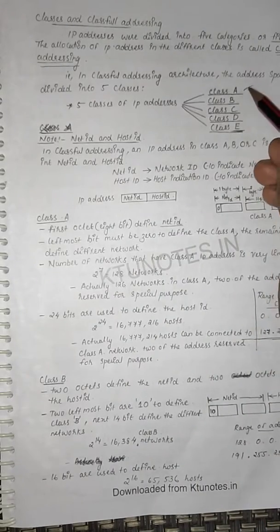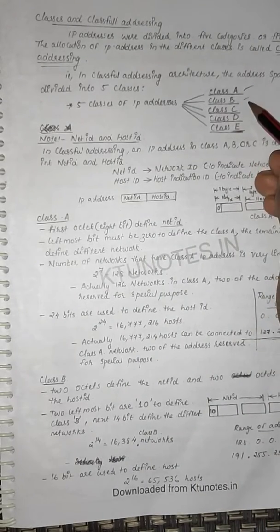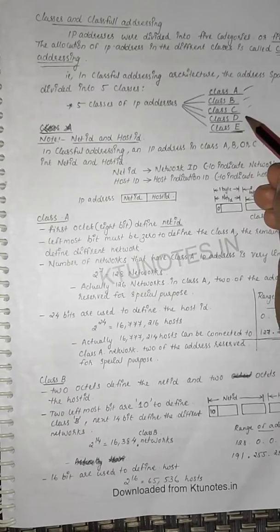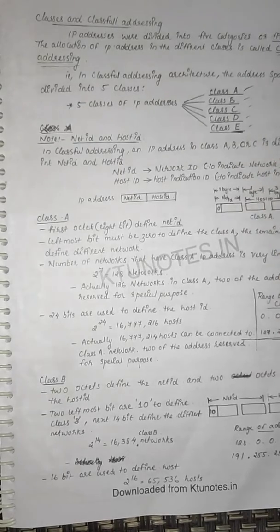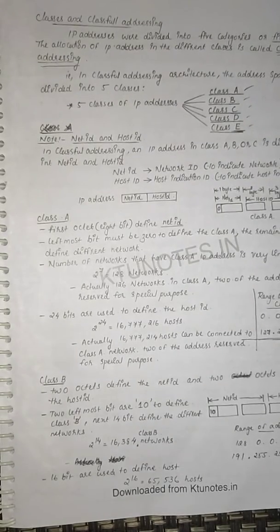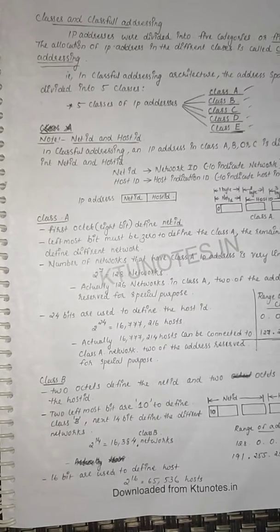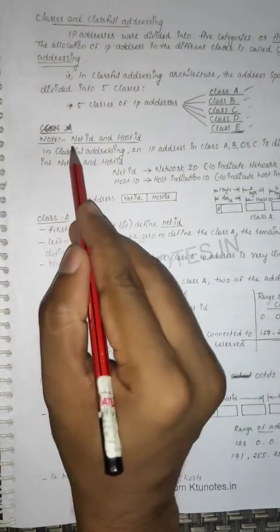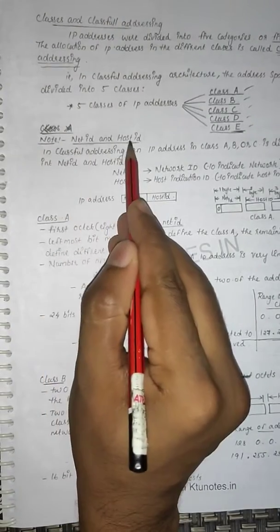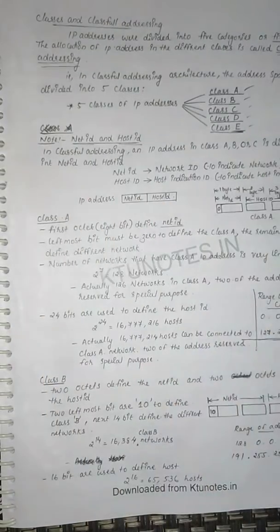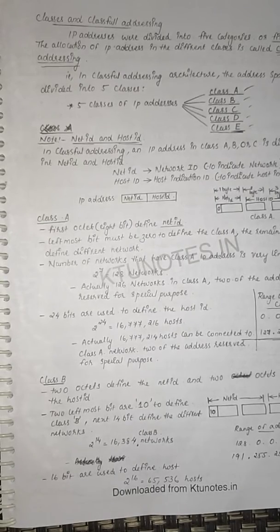The five classes are: Class A, Class B, Class C, Class D, and finally Class E. Each type of address is normally represented using a format that has a Network ID part and a Host part — two parts: network ID and host part.